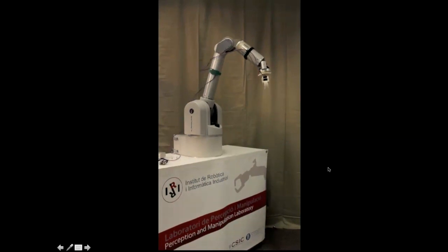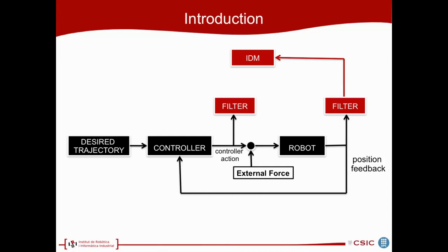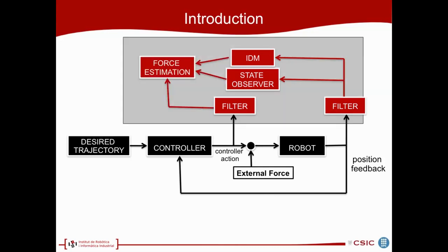To do so, we started with the typical control scheme, then we filtered the signals in order to remove high-frequency noise, and then we computed an inverse dynamic model, that is, to compute the torques of the robot's dynamic equation for our given robot state. Then we also built a state observer, which is a less noisy estimation of the state of the robot, that can be used together with the inverse dynamic model to have the force estimation that we want.